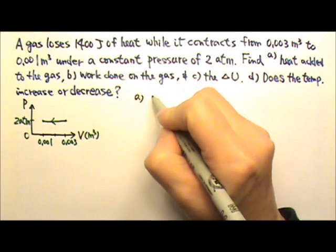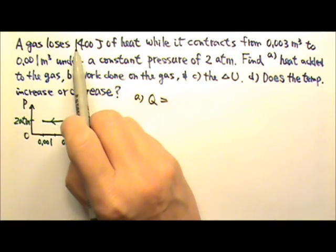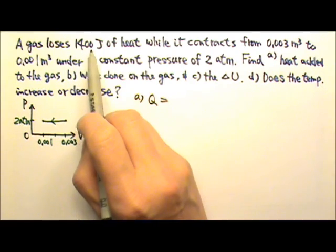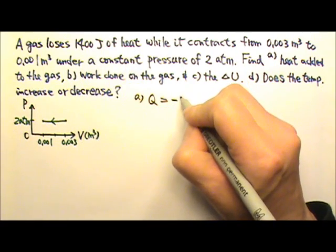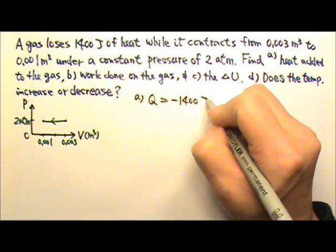Part A. For the heat added to the gas, since the gas loses 1400 joules of heat, that means the heat added to the gas is negative 1400 joules.